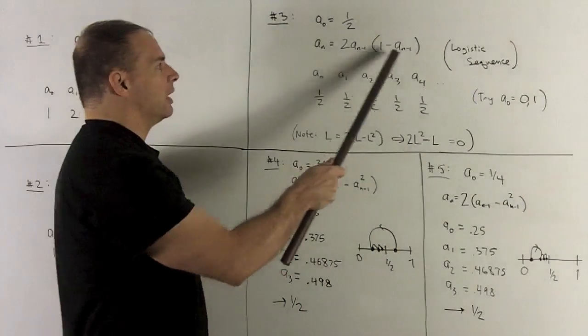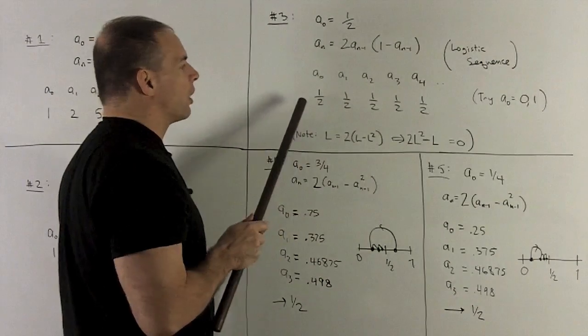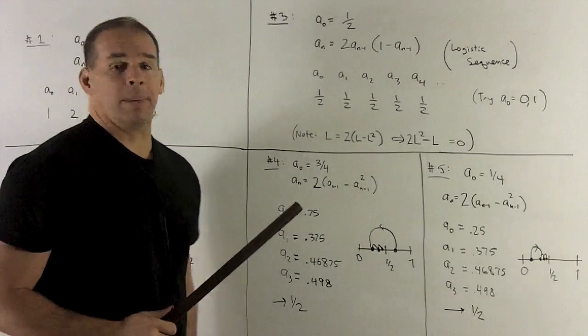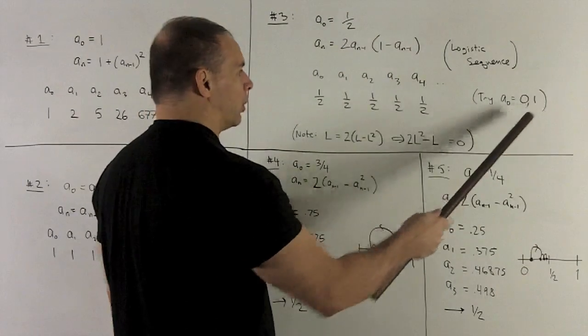Okay, if you notice, if I put 0 in here, same thing. I start with 0, and then I just wind up producing a big string of zeros. All right, so I'll leave it to you to see what happens when you put a 1 in.